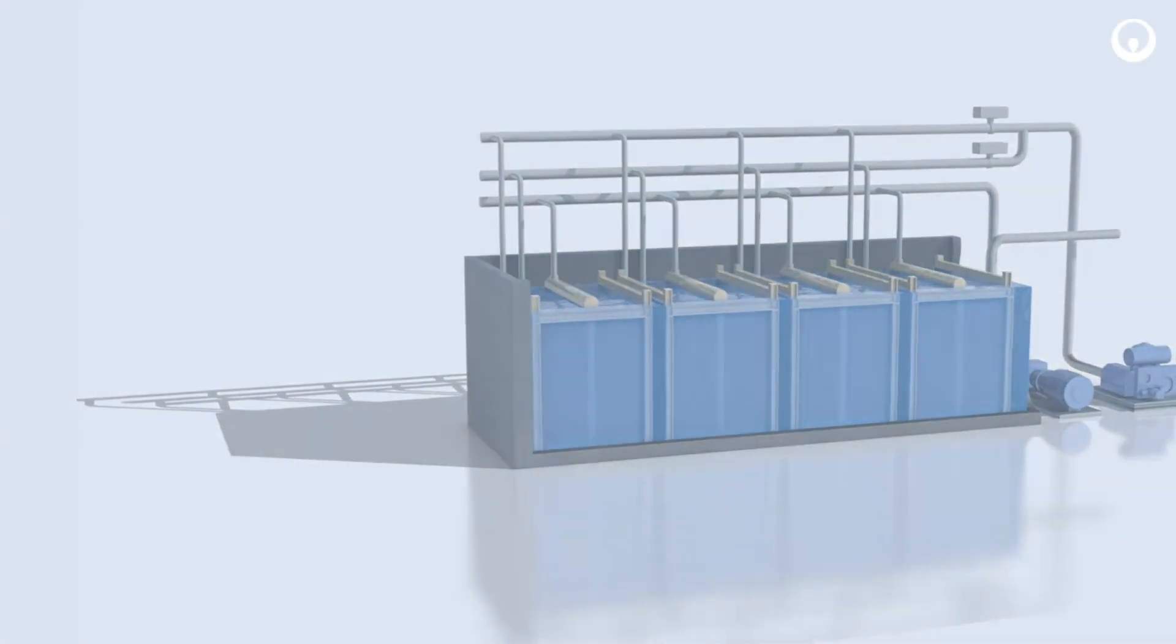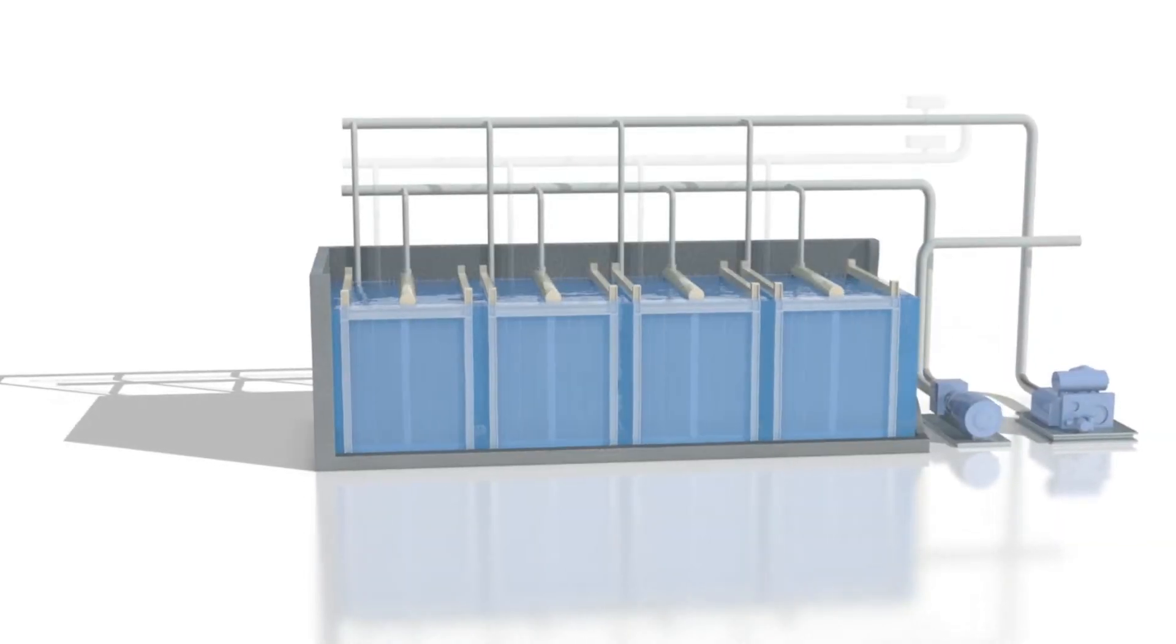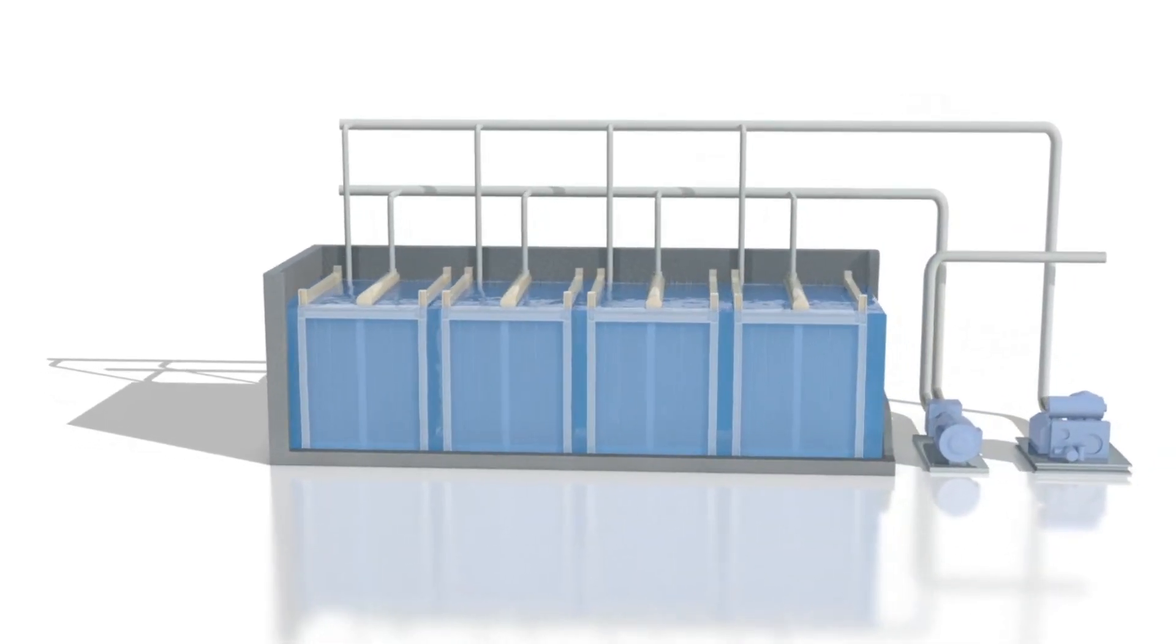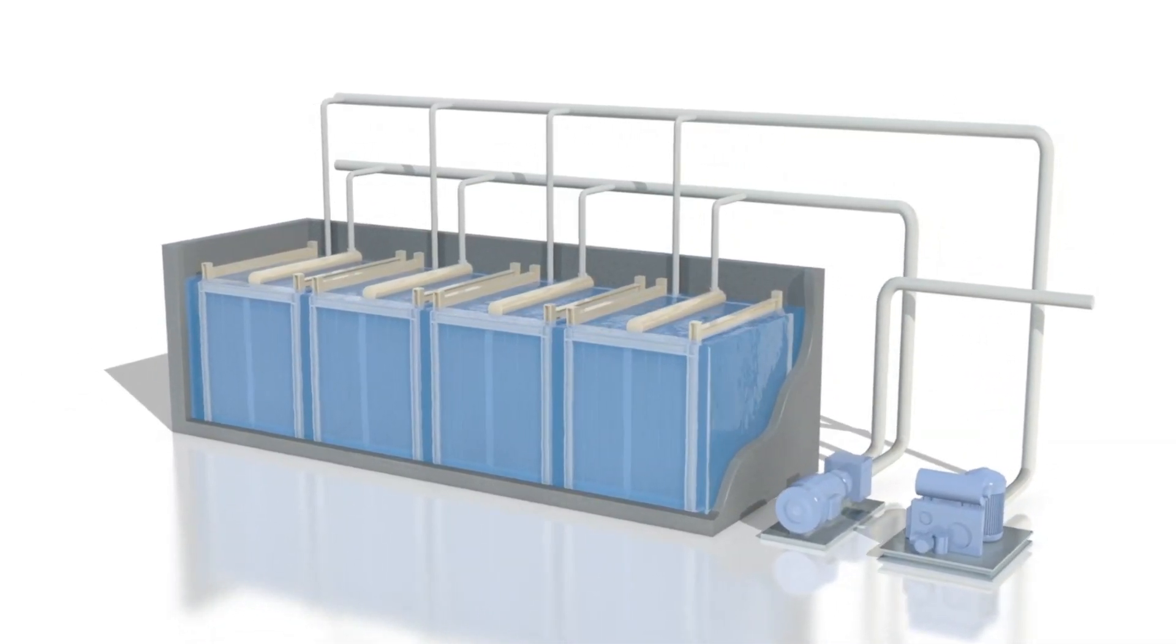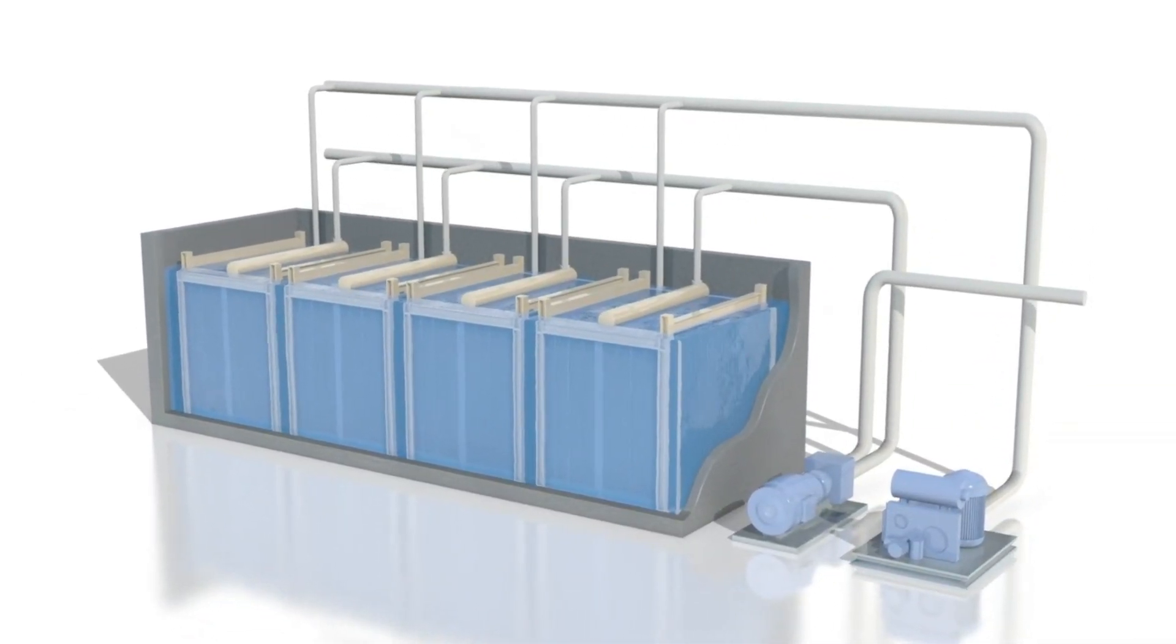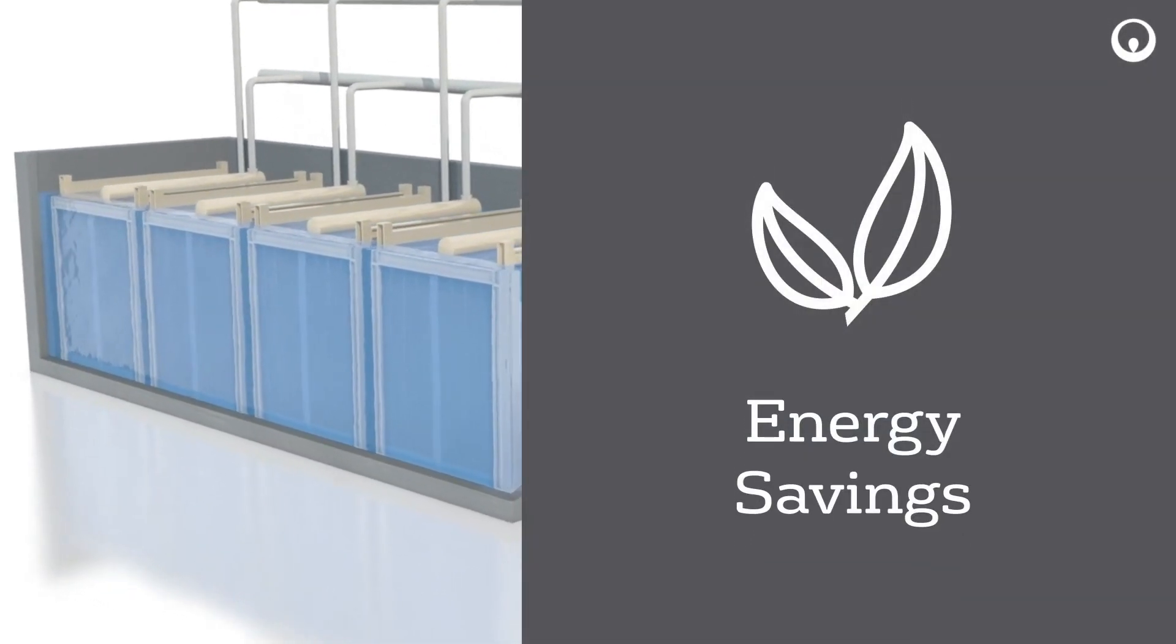Leap MBR employs simplified aeration piping along with the elimination of air cycling valves. This simpler, yet highly reliable design enables customers to cut their required membrane aeration equipment and controls in half. Only a single air header is required per membrane train, and the two cycling valves per train are replaced by a single automatic isolation valve.